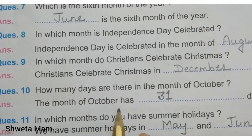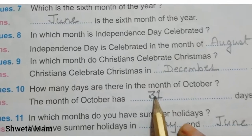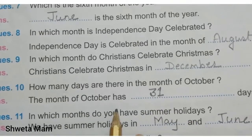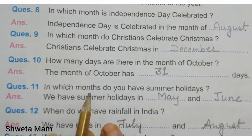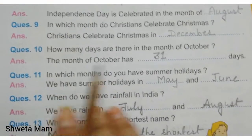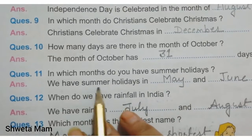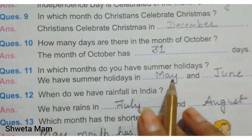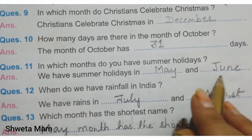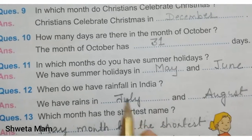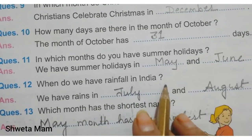Question number 10: How many days are there in the month of October? The month of October has 31 days. In which month do you have summer holidays? We have summer holidays in May, M-A-Y, and June, J-U-N-E.